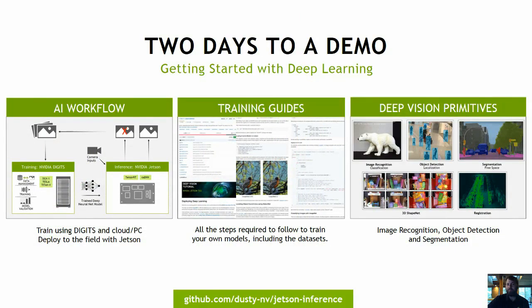One open-source tutorial we developed for the community is what we call 'two days to a demo,' which is an end-to-end guide to getting started with training and deploying your own deep learning models using our interactive DIGITS training framework and TensorRT for accelerated inferencing onboard Jetson. It contains step-by-step guides for image recognition, object detection, and segmentation vision primitives, which can be retrained on your own subject matter and integrated into AI-powered applications. It's called two days to a demo because you can follow it in roughly two days to make your own deep learning app, and we've updated the code to support Xavier.